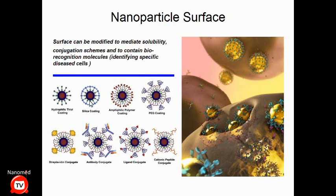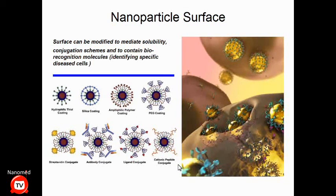Another attractive aspect of nanoparticles is that you can also change the surface chemistry of these materials rather easily. You can make the surface hydrophilic, put a glass coating on the surface, different polymers, different proteins like streptavidin, antibodies, peptides, or DNA. All these coatings allow you to manipulate the interaction with cells and how the nanoparticle behaves within the cell.